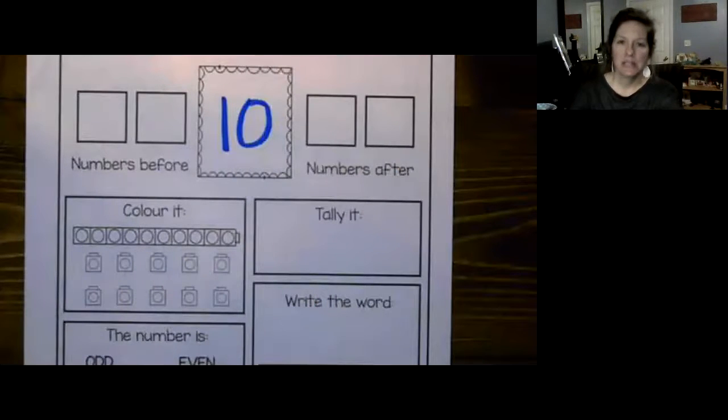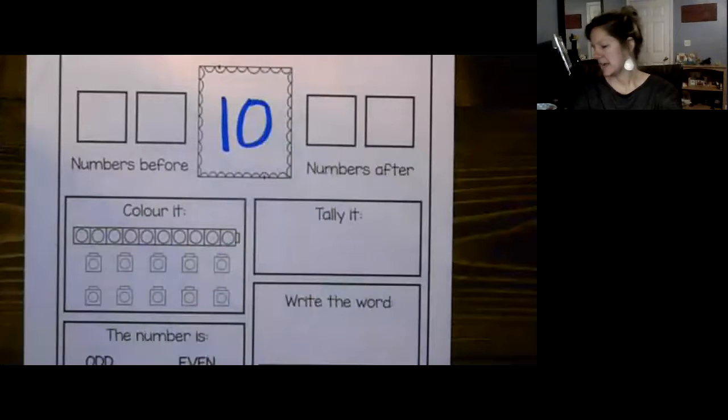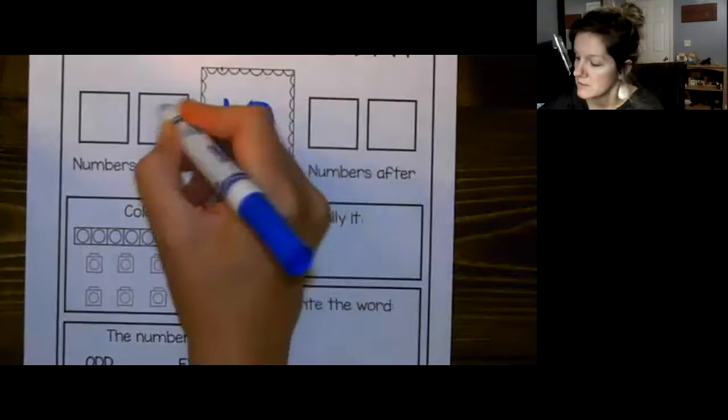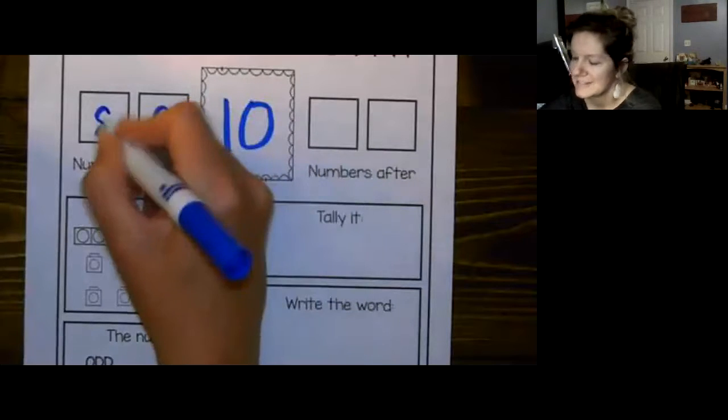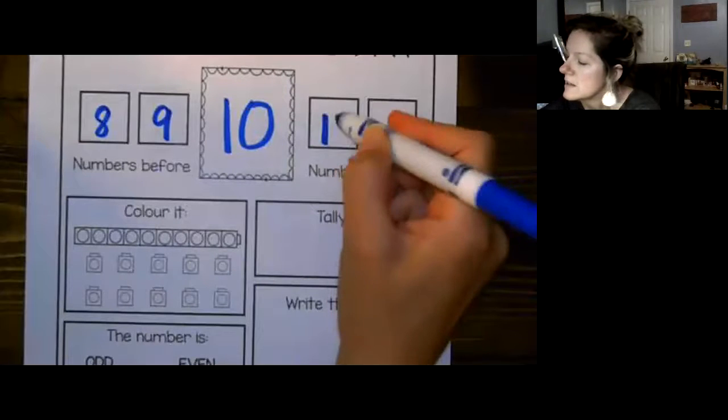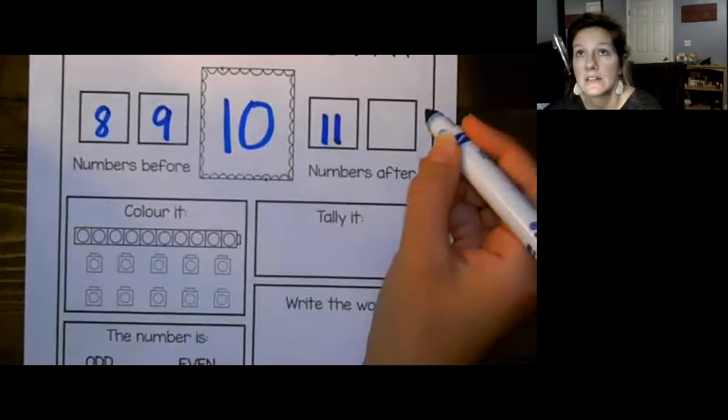For the number 10, we need to figure out the two numbers before it and the two numbers after it. Let's count up to 10: 1, 2, 3, 4, 5, 6, 7, 8, 9, 10. We know how to count backwards from 10 right, like a rocket ship: 10, 9, 8. What number comes directly after 10? 1, 2, 3, 4, 5, 6, 7, 8, 9, 10, 11. And what comes after 11? 10, 11, 12.